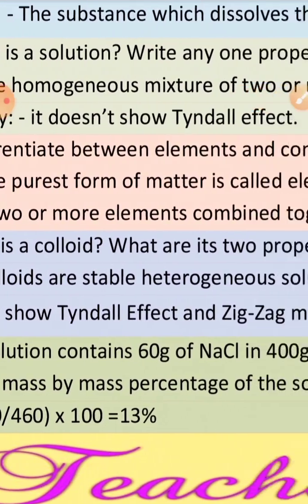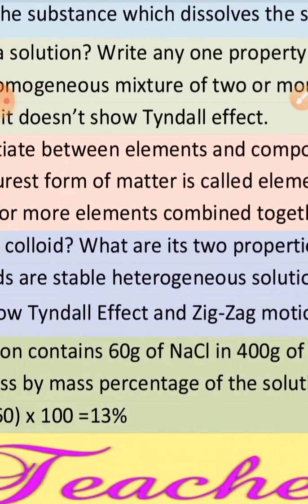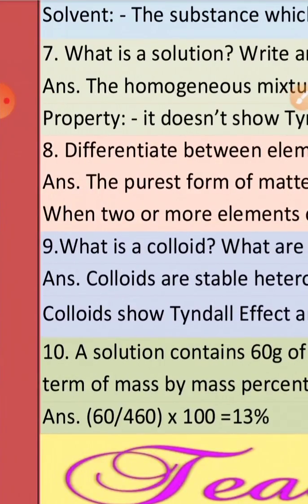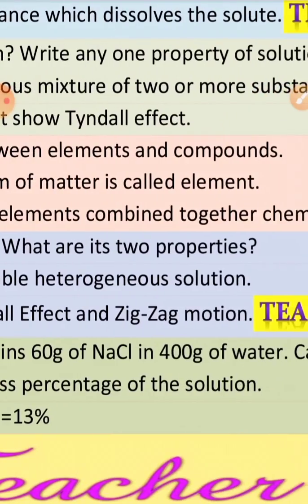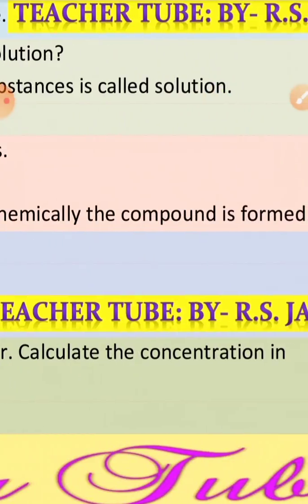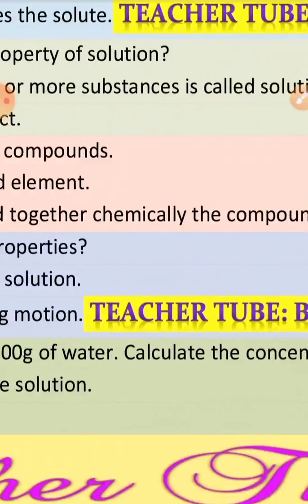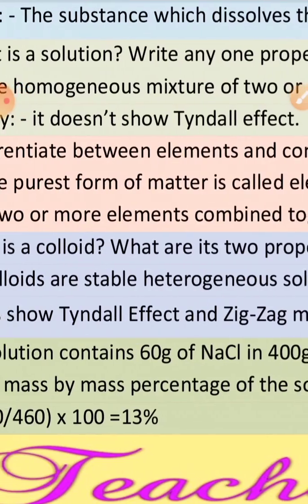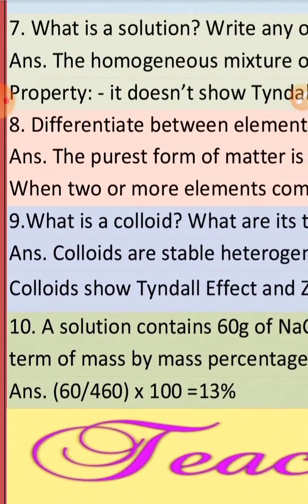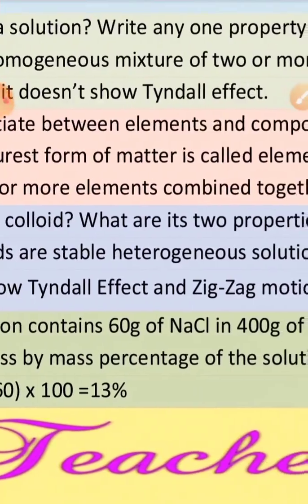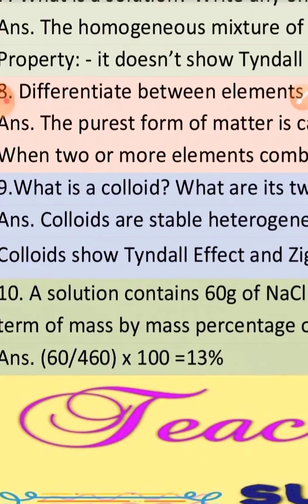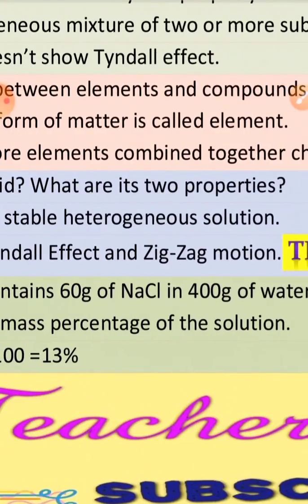When two or more elements combine together chemically, they form a compound. Question number nine: What is a colloid? What are its two properties? Colloids are stable heterogeneous solutions. Colloids show Tyndall effect and zig-zag motion.